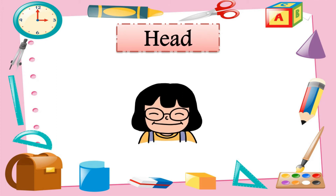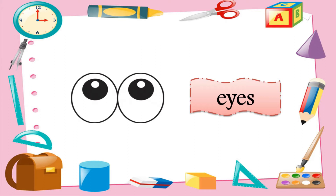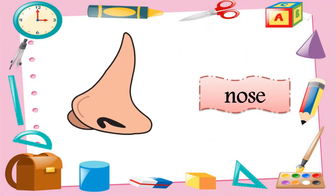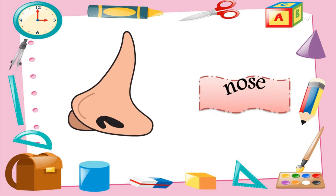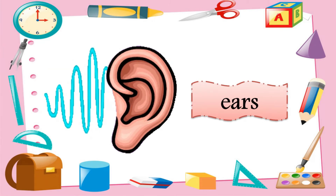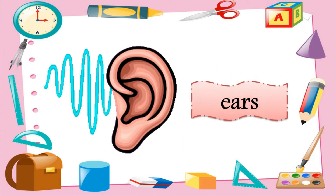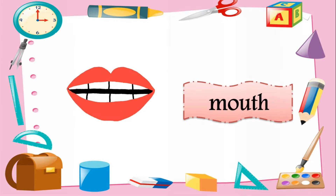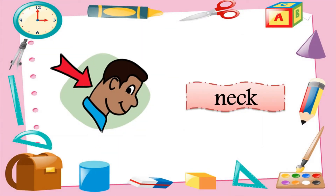Here are the different body parts that are included in the head: eyes, nose, ears, mouth, and neck.